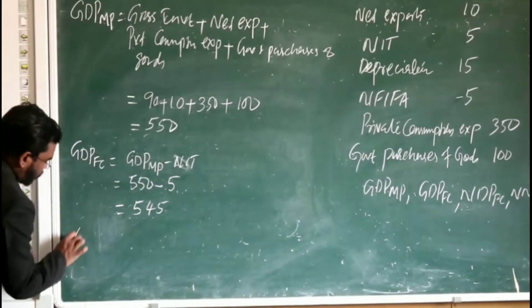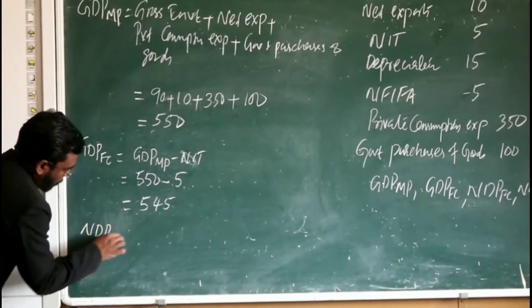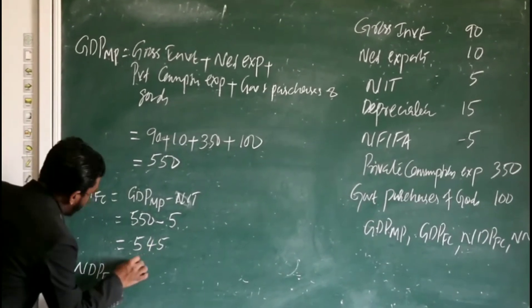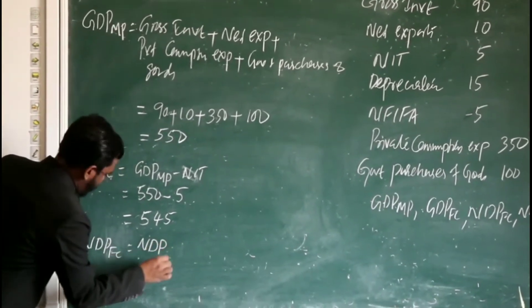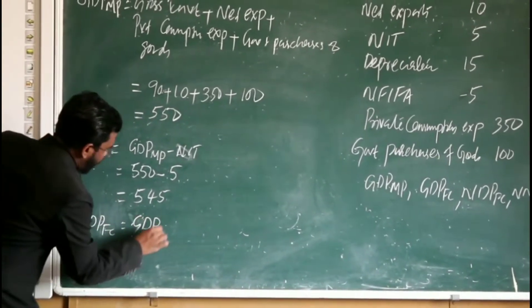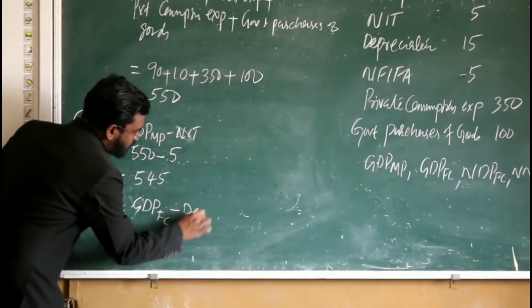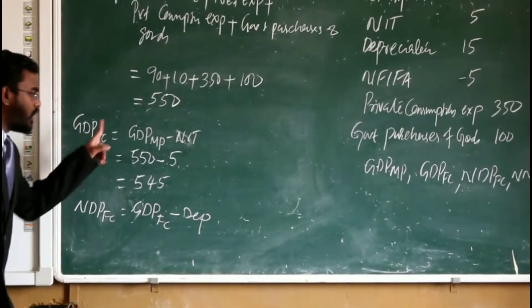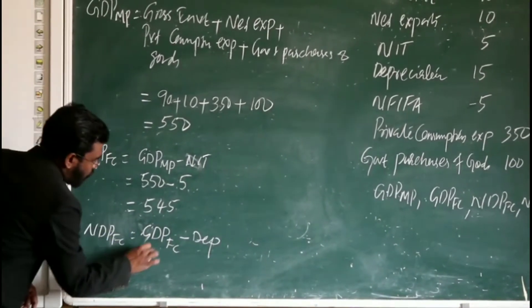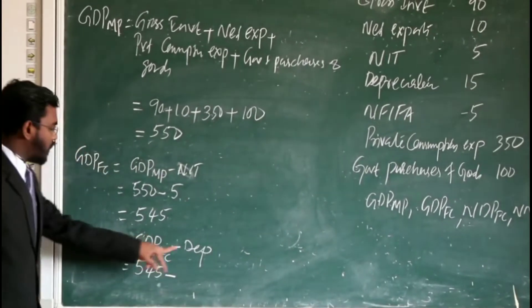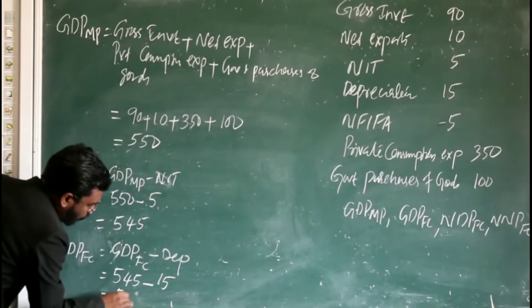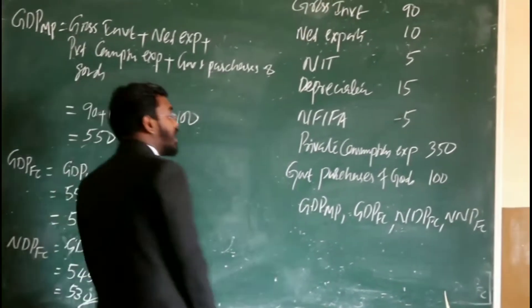Next question: NDPFC. NDPFC is equal to GDPFC minus depreciation. We already calculated GDPFC, and if we subtract depreciation, then we will get NDPFC. So 545 minus depreciation, which is 15, that is equal to 530.